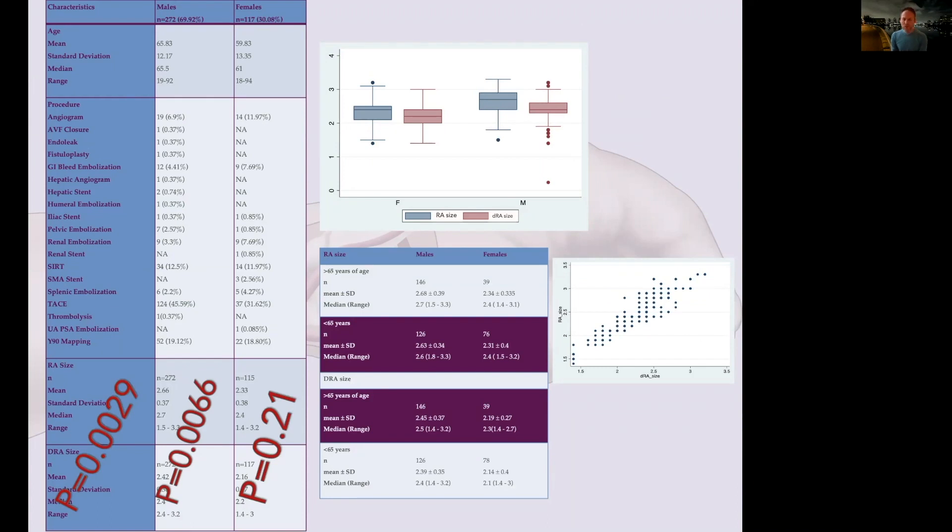In other words, you don't necessarily have to downsize your sheath in order to do distal access. So although it's statistically significant, it's not clinically significant. Interestingly enough, females themselves were not statistically significant, but bear this in mind—it's a common misconception that the distal radial artery is significantly smaller. Clinically, this doesn't translate into a problem.